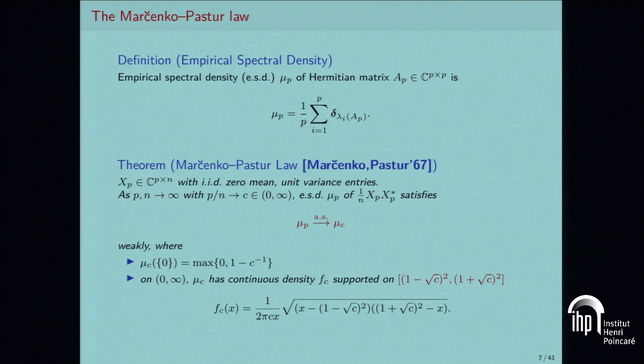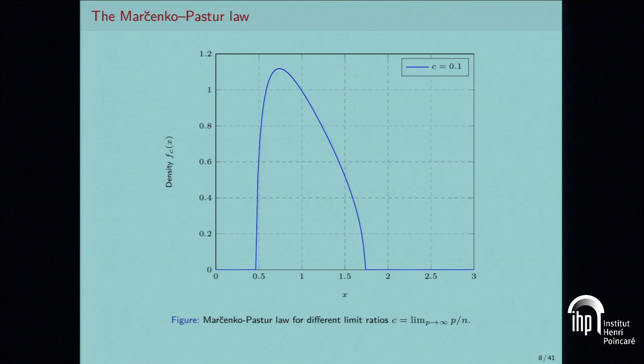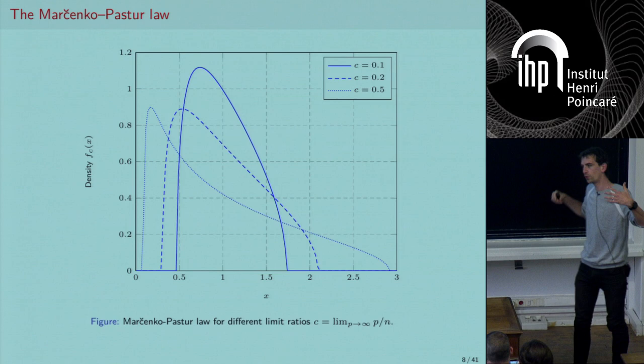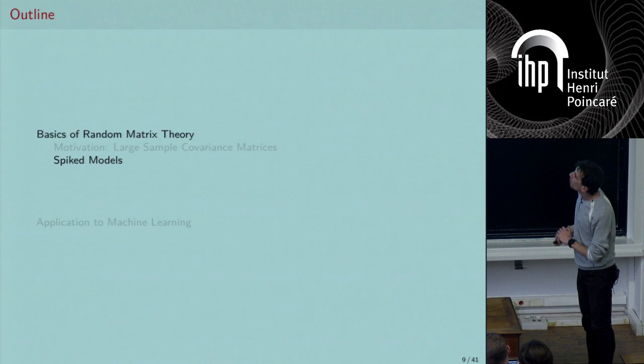But when c increases — when you have not enough data or each data point is very large — you get a spreading of eigenvalues. This is a typical picture of the Marchenko-Pastur distribution for p/n = 1/10, 1/5, and 1/2: the eigenvalues really spread out. So you expect all eigenvalues to be 1, but in reality they spread.